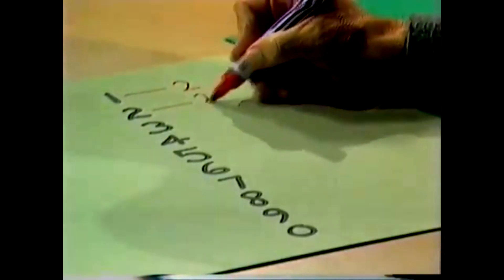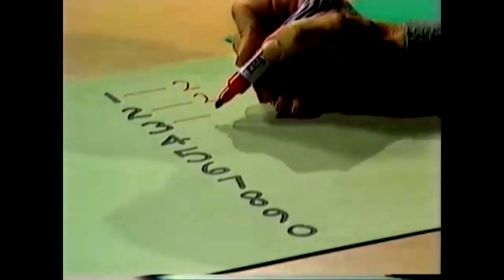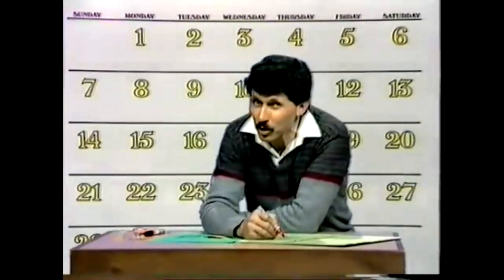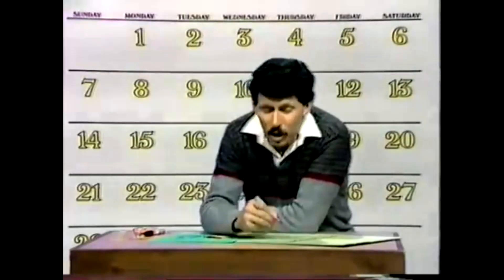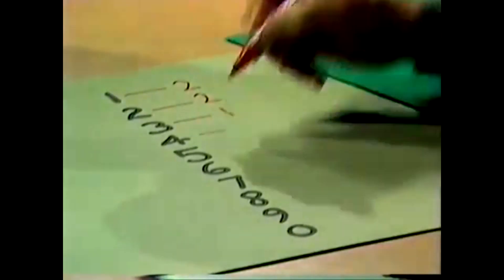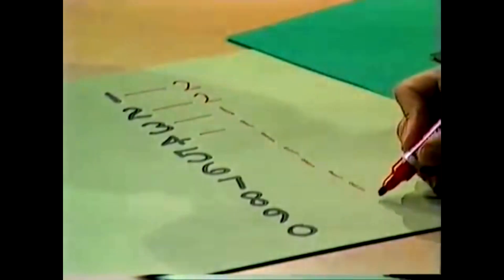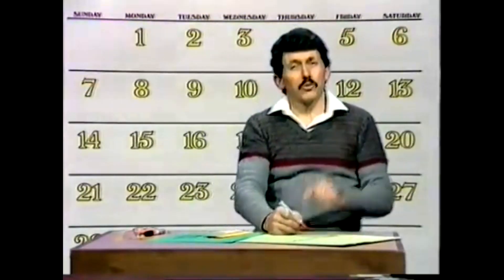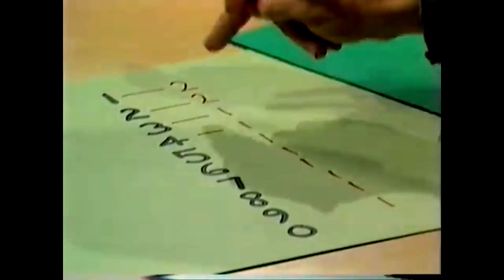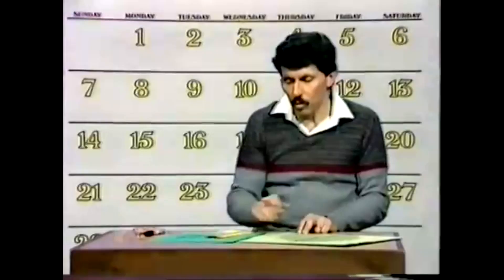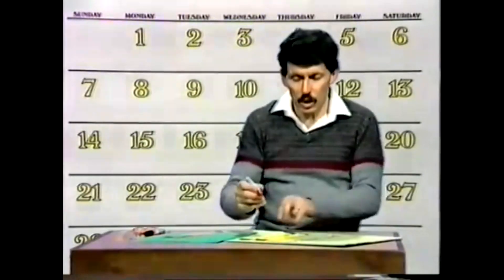What about threes? Would you ever need more than one? You'll need one for the 3rd, one for the 13th, one for the 23rd, one for the 30th, one for the 31st — but it never gets to the 33rd, so you'll never need two of those. So we can get by with just one three. Similarly, we can get by with one four, one five, one six, one seven, one eight, one nine, and one zero. So the total number of spaces we need for the figures is 1, 2, 3, 4, 5, 6, 7, 8, 9, 10, 11, 12. Well, what do you know — we just happen to have 12 spaces on the yellow cards!